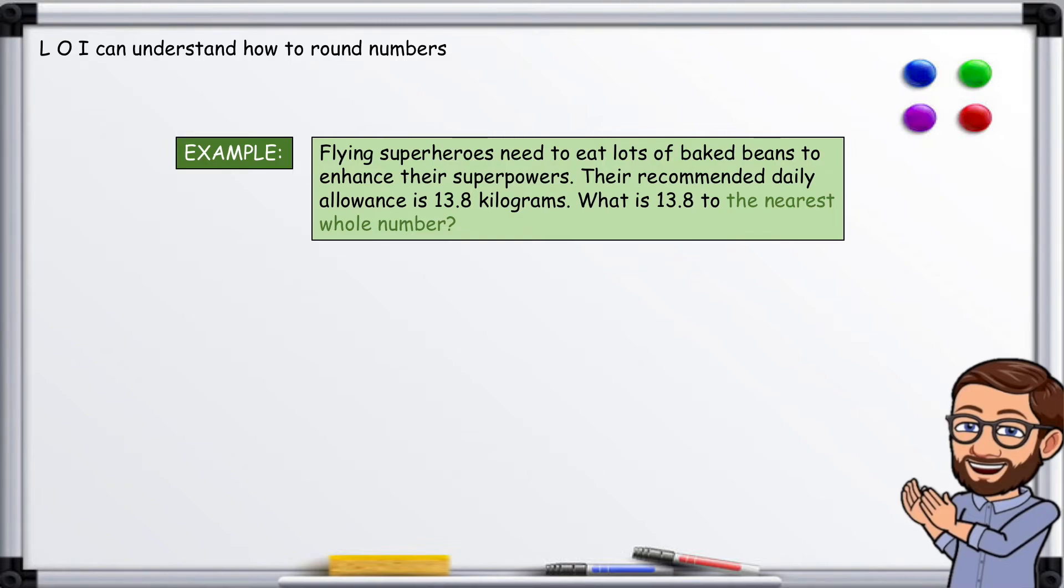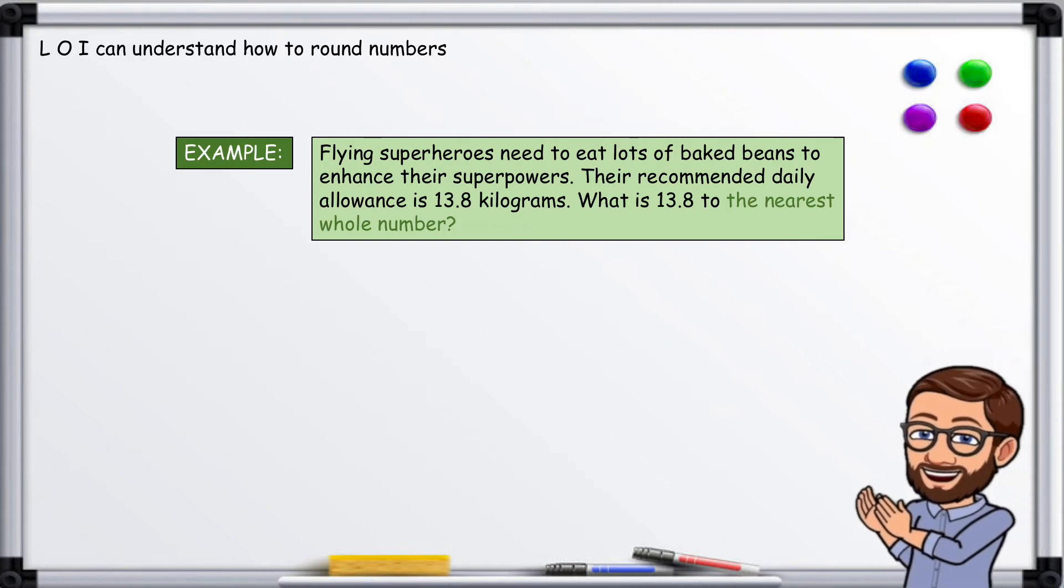Example. Flying superheroes need to eat lots of baked beans to enhance their superpowers. Their recommended daily allowance is 13.8 kilograms. What is 13.8 to the nearest whole number?